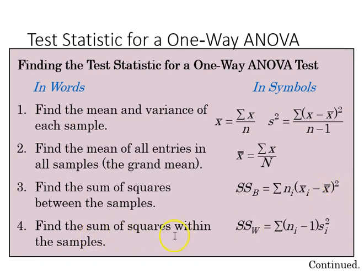And then we find the sum of squares within the sample as the sum of n sub i minus 1 times the variance of i.